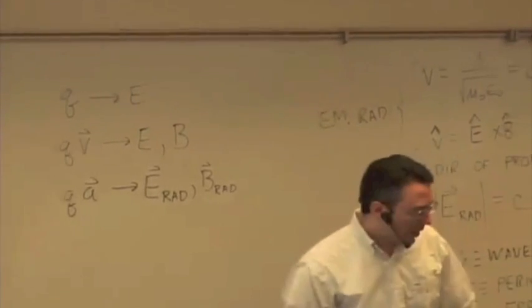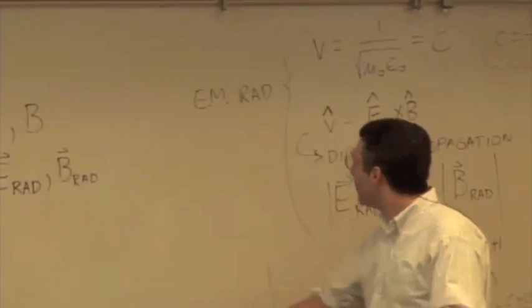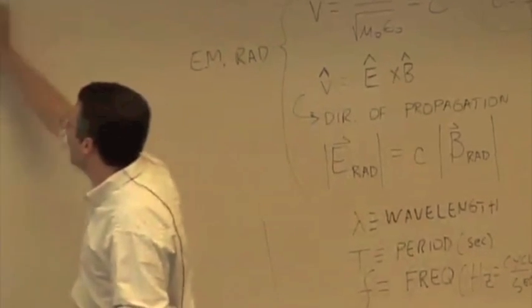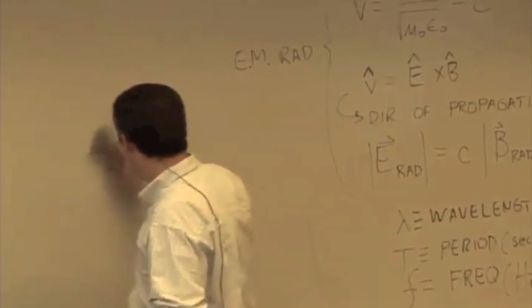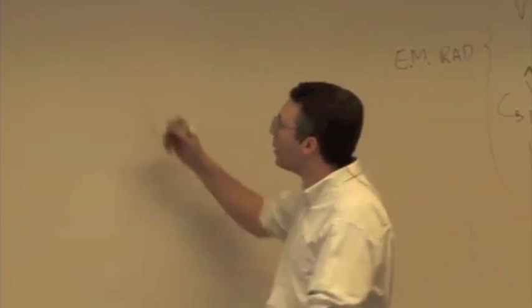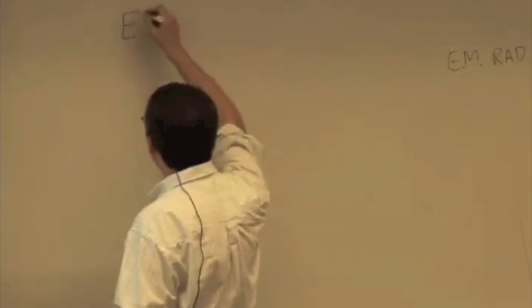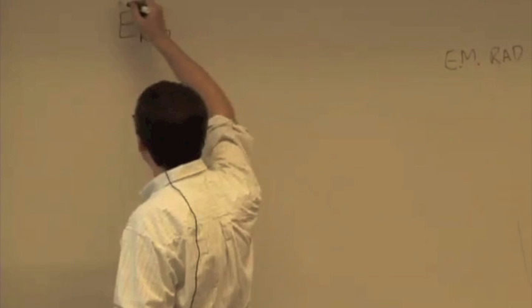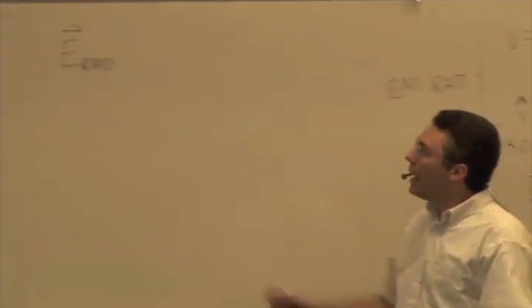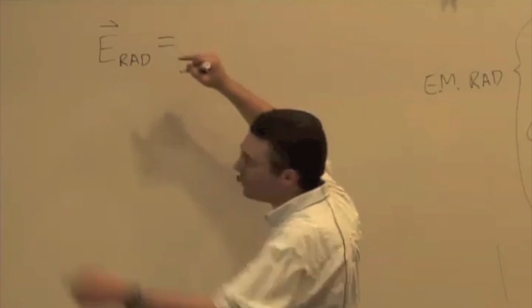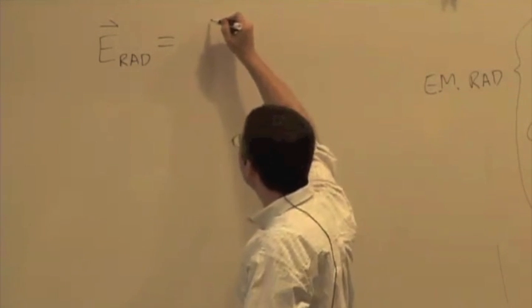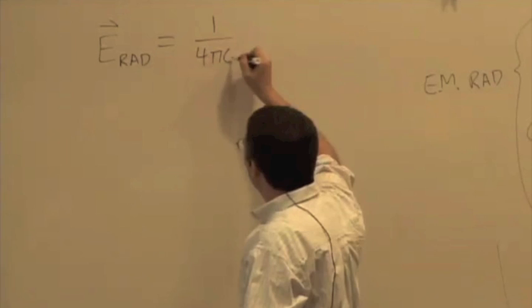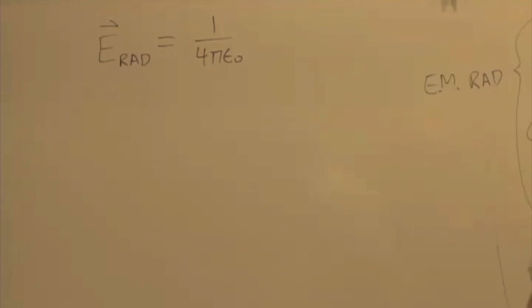What we're going to do is try to figure out, or at least examine, the direction of the radiation or the radiative component of the electric field due to an accelerated charge. I'm just going to give you a formula. It's not something you have to memorize, but it is something we're going to have to figure out how to interpret. The radiative field, or this kink in the field lines, is given by the formula 1 over 4π ε₀, the old constant.